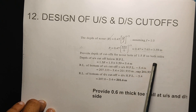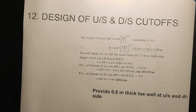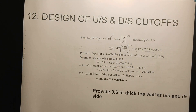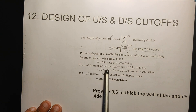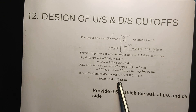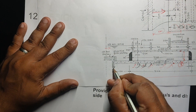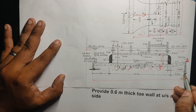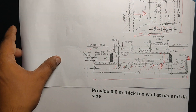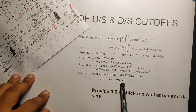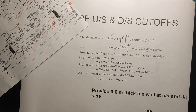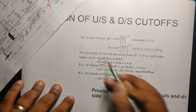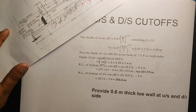Now let's look at the depth of upstream cutoff below high flood level: 1.5 times R. The bottom of downstream cutoff is also 1.5 times R. Let's look at the specific points — this point is where we have to cutoff here on the upstream side, and this point is where we have to cutoff on the downstream side. We have to design the bottom of both the upstream and downstream cutoffs.